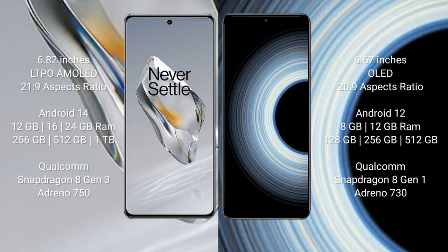The OnePlus 12 runs on Android 14. It comes with 12GB, 16GB, or 24GB RAM and 256GB, 512GB, or 1TB internal storage, powered by a Qualcomm Snapdragon 8 Gen 3 processor and GPU Adreno 750. The Redmi K50 Ultra runs on Android 12, with 8GB or 12GB RAM and 128GB, 256GB, or 512GB internal storage, using a Qualcomm Snapdragon 8 Gen 1 processor and GPU Adreno 730.